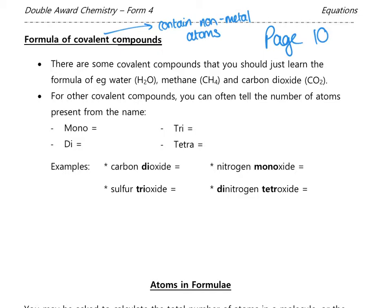There are two general points about the formula of covalent compounds. First, there are some covalents you should just learn the formula of because you can't work it out from the name. Water is a covalent compound containing hydrogen and oxygen, both non-metals, and the formula is H₂O. Methane has the formula CH₄ — carbon and hydrogen — and there's no way of telling that from the name until we study organic chemistry.